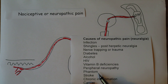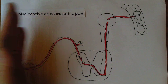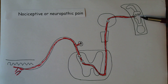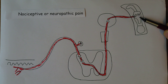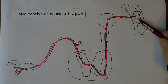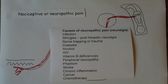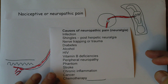Phantom limb pain is a classic neuropathic pain. If a hand is amputated, you're not feeling the hand in the hand itself — you're feeling it in the sensory cortex. That limb is still represented in the sensory cortex, and so are the spinal cord pathways leading there. So phantom pain could be caused anywhere along this pathway. Neuropathic pain can also complicate stroke, chronic inflammation, and cancer — sometimes from physical pressure of a tumour on a nerve — and chemotherapy can cause it too.